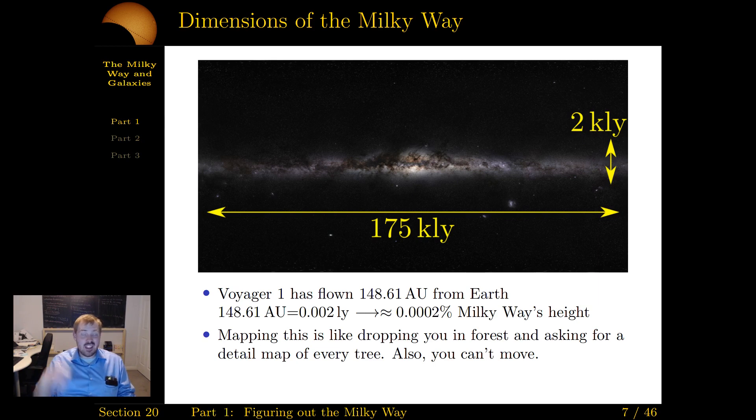Voyager 1, this is the furthest man-made object out there. It is currently, after about 50 years of just straight travel in space, it's rounding 150 astronomical units away from the Earth, which is .002 light years, which, comparing that to the size of the Milky Way, is .0002% the height of the Milky Way. And that's the furthest we've ever launched something to the cosmos.